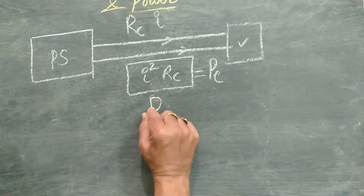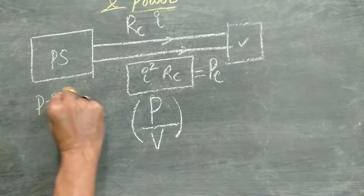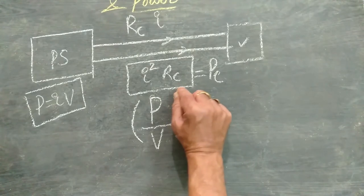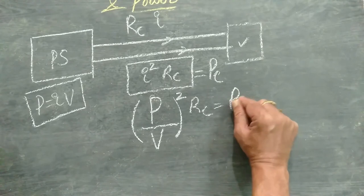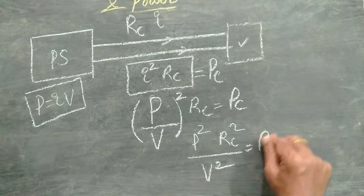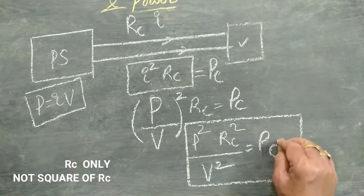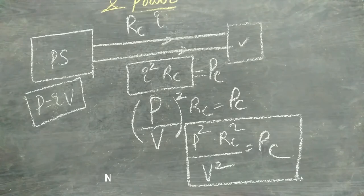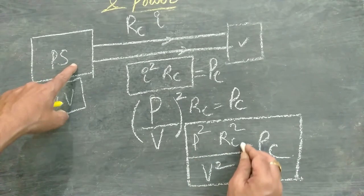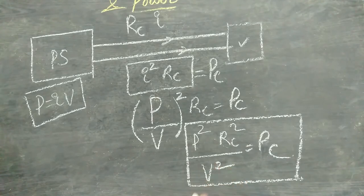This I can be written as P by V, because we know that power is equal to I times V, just now we have derived. So this square RC must be PC. Now how to minimize this PC, we wanted to reduce. So to reduce that, this power is constant, the power stations, and once we install the cables you cannot change. What we can change is the voltage. So if you keep the higher voltage, then this becomes automatically lesser.